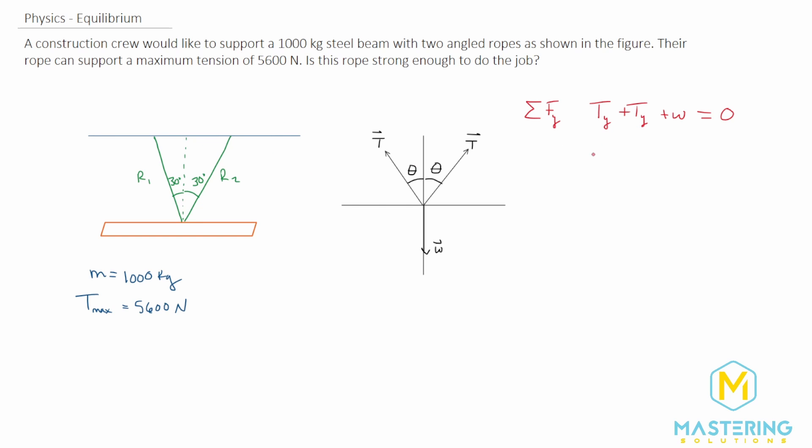So we can combine this, so we have two times the tension in the y direction. Obviously w is negative because it's going in the negative y direction, so it'll be minus w, and that's equal to zero. We can add w over to the other side, so we have 2T is equal to the weight, and of course we can substitute in the weight for mg. So 2T is equal to mg.